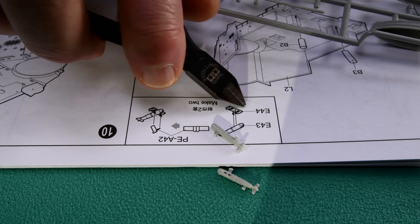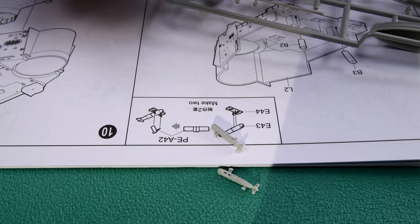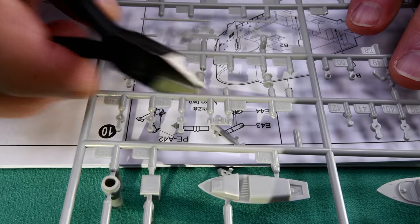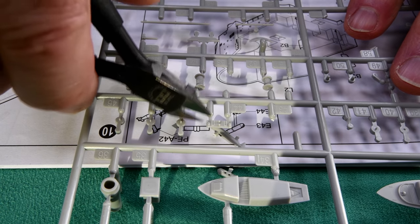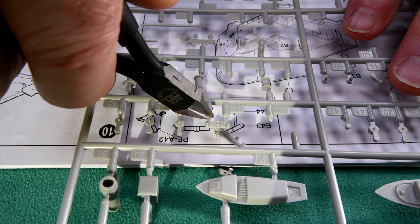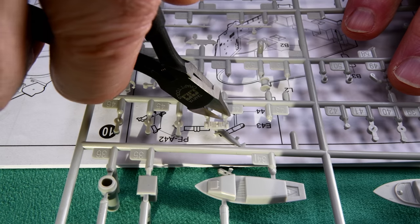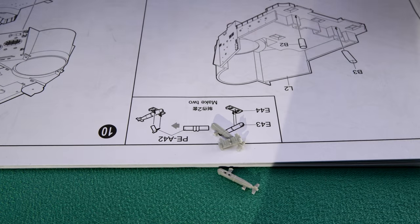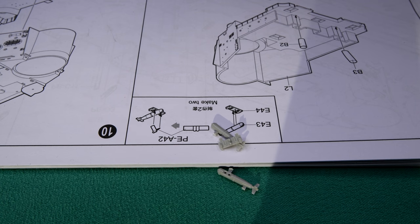Now we need two E44s. I may as well have grabbed them when I was right there. Here they are, 44. Now I've got to bring the other sprue back. That was poor planning on my part.